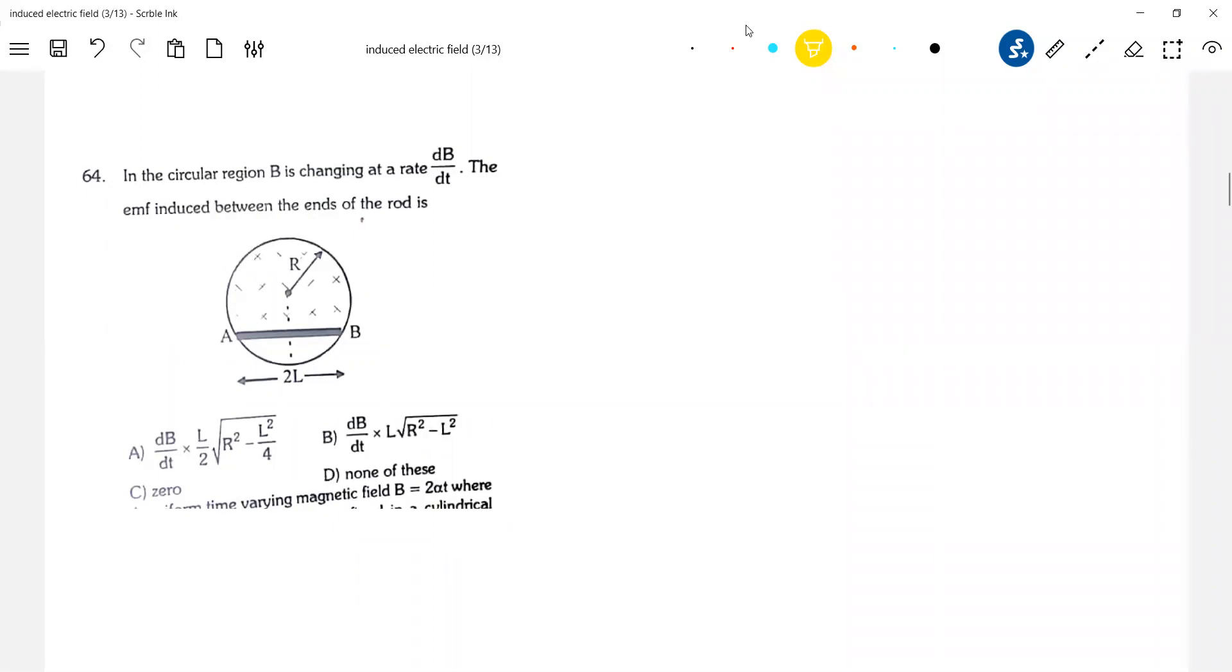Now this is the circle. So B bar and there's a rod which is placed here. Only EMF induced across that rod is what we're asking now. So this should be A, this is B, this is O. So what can be this length? This is R, this is equal to R.